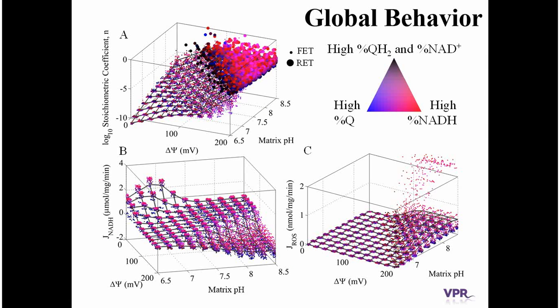Now I'd like to go over the global behavior of the model as we change all the model inputs. These are some very busy slides, but to start, I want to draw your attention to the top right where we have the color legend. Black indicates conditions of high products — either QH2, quinone, or NADH. Blue is a condition where we have a lot of quinone and little of everything else. Red is where we have a lot of NADH and little of everything else, and purple represents the various combinations. Each figure plots some output as a function, with membrane potential on one axis and matrix pH on the other, and the mesh represents the average value across all conditions shown.